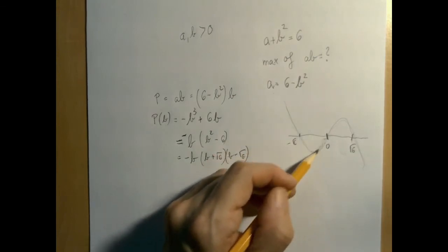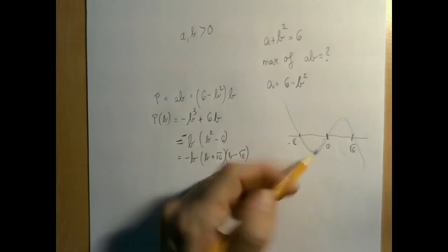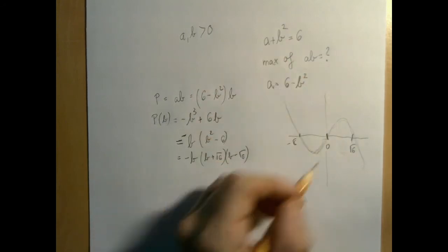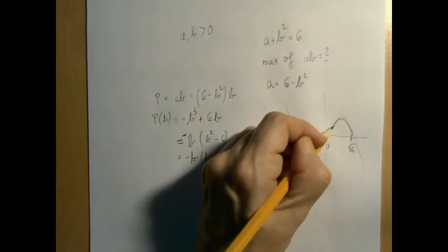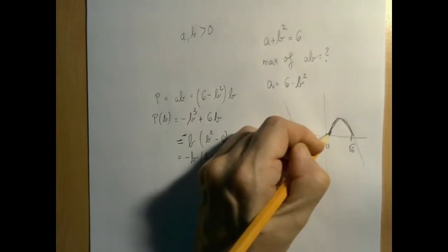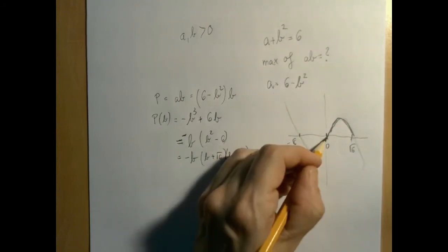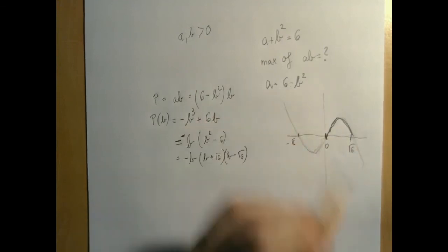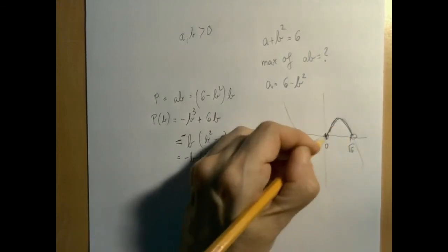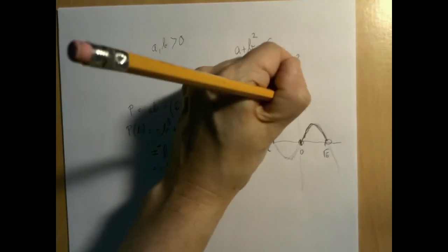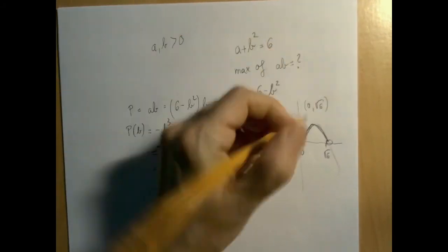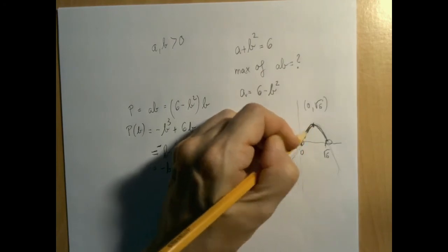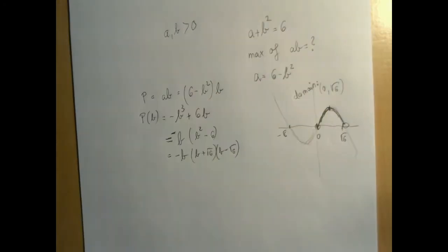When the product is negative, for sure not both numbers are positive. So our domain is really just between 0 and square root of 6. Because if we go to the left, then B is negative. If we go to the right, B is too big, so A is negative. So our domain is really just the open interval 0 to square root of 6. And on this domain, the one relative maximum we are going to find is an absolute maximum.